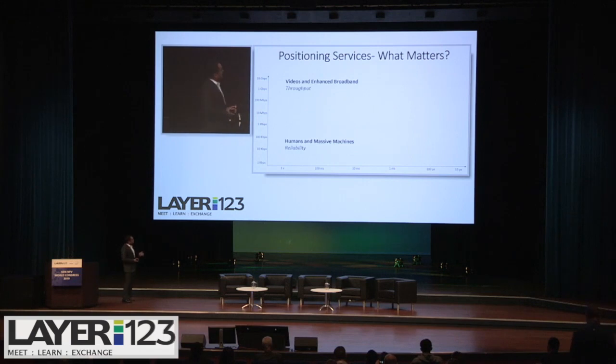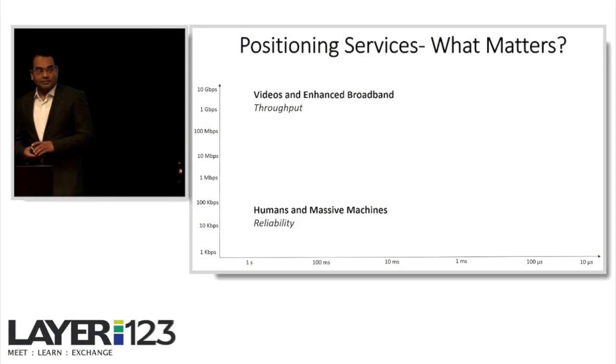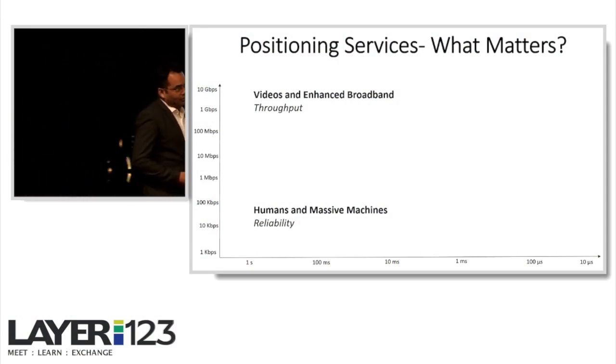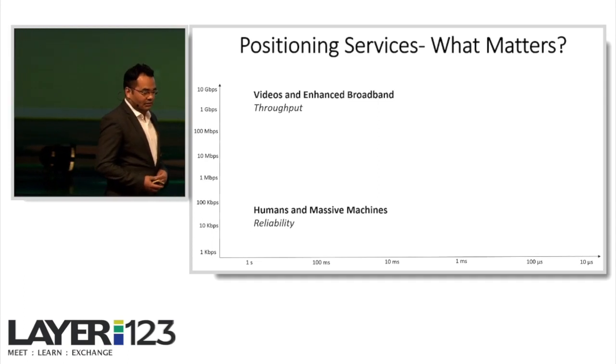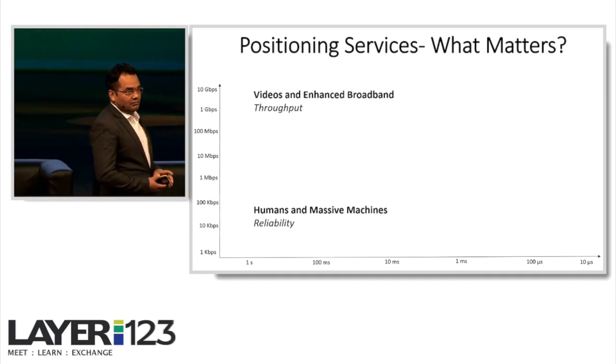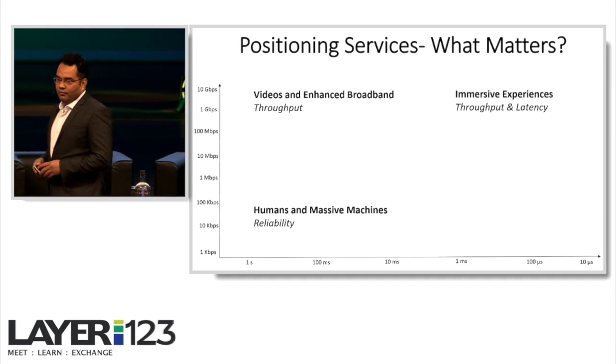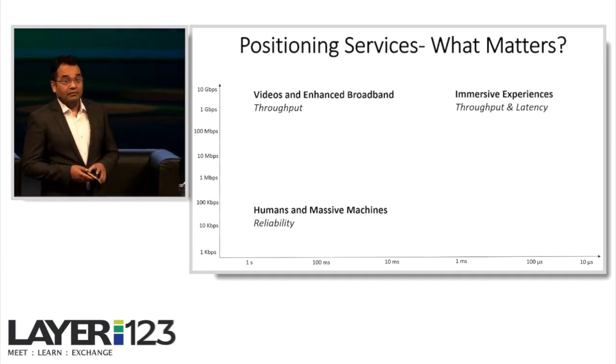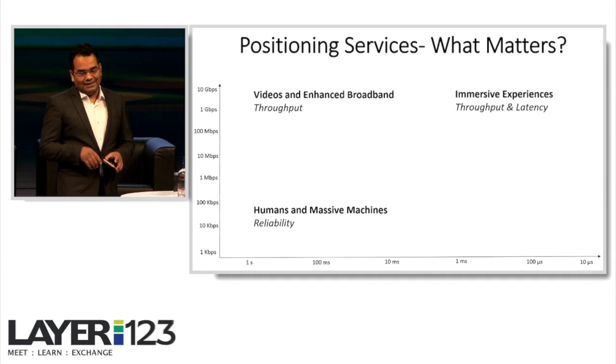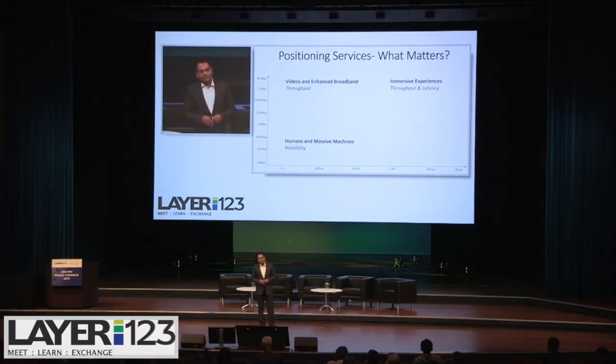The next one is when we go further up, it's video and enhanced broadband. Now video covers everything, essentially. It's not only high definition, but also the ARs and the VRs of the world, six degrees of freedom. Now if you move more on the right, when we have high throughput and low latency, when you combine these two, that's where you get the immersive experience. And there the requirement is both throughput and latency.